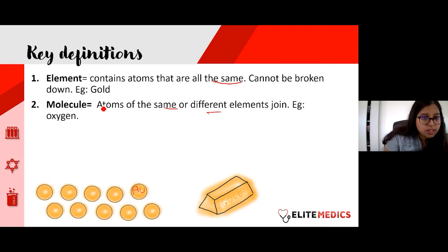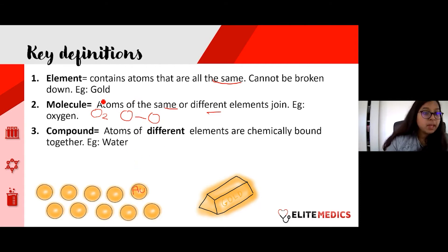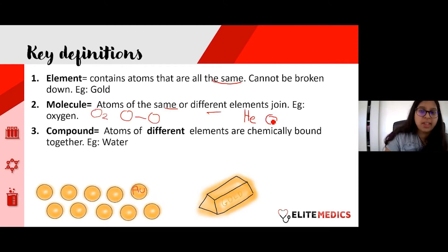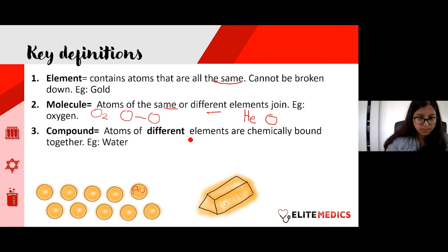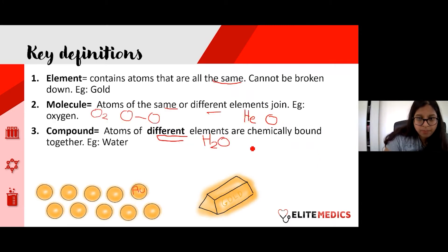A molecule is when atoms of the same or different elements join together. For example, oxygen O₂ consists of two oxygen atoms — that's a molecule. Not all elements exist as molecules; helium exists as a single atom and doesn't need to bond with anything. A compound is different from a molecule: compounds are atoms of different elements chemically bound together. For example, water (H₂O) consists of two hydrogen atoms bonded to one oxygen.